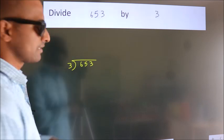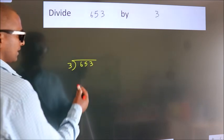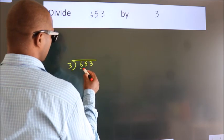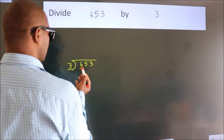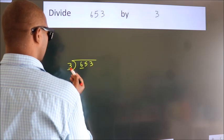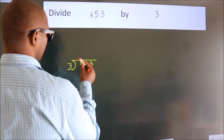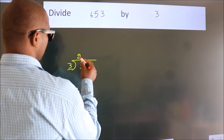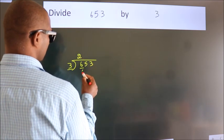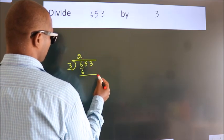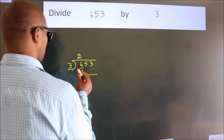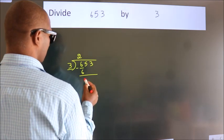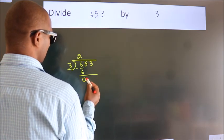Here we have 6, and here 3. When do we get 6 in the 3 times table? 3 twos are 6. Now we should subtract. We get 0.